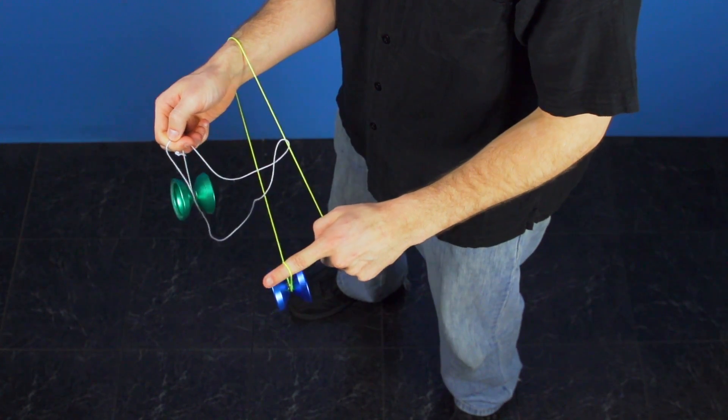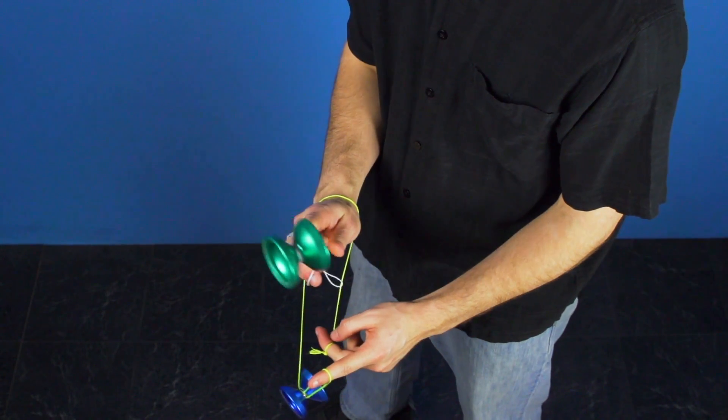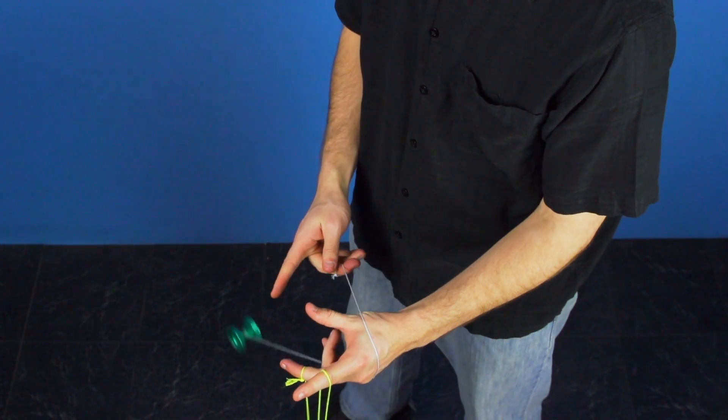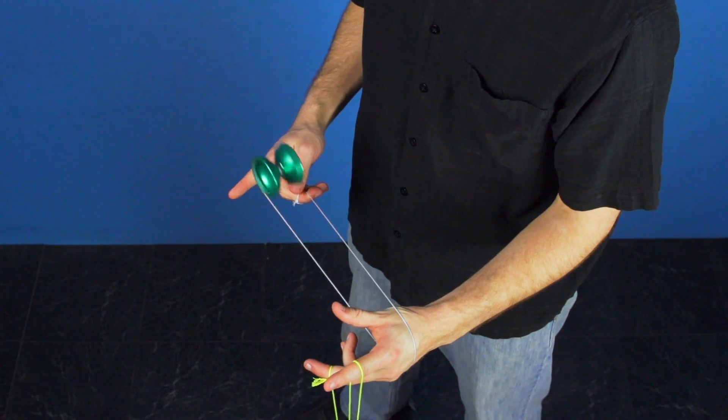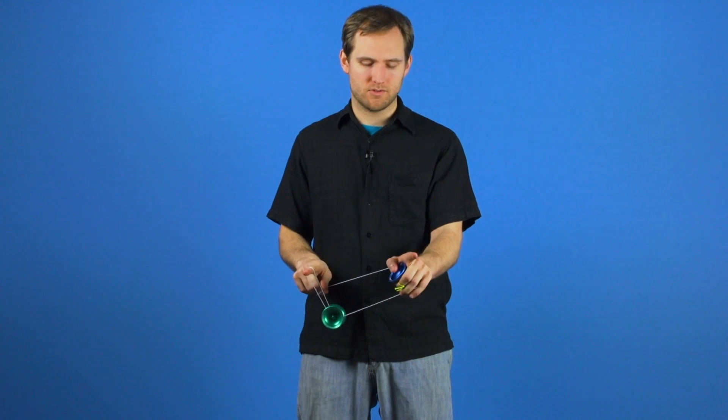For the last part of the trick, we're going to do that motion again. Take your dominant hand and throw it around, and as you do that, pull your wrist through the string formation. You'll find that will undo all the kinks and end you back up in that trapeze and his brother mount that you were in after your first throw.